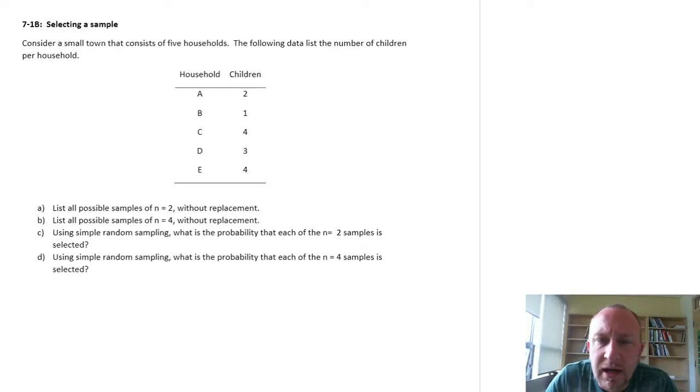Hello, welcome back. Here's another exercise looking at sample selection. We've got a population that contains just five elements - a number of children, although we're not going to use that information in this question. We're going to look at the number of different samples we can get out of this population: part A samples of size 2, part B samples of size 4, and then we'll look at the probabilities that correspond to each of these.